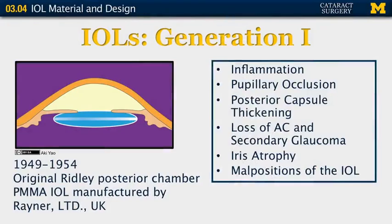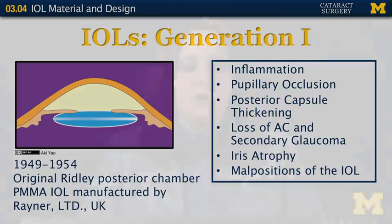Let me start first with a history of intraocular lenses. The original intraocular lens was created by Sir Harold Ridley. Sir Harold Ridley had noted that pilots were returning from World War II with pieces of plane canopy in the eye, and they were tolerating the material quite well. This canopy was made of polymethyl methacrylate. He therefore decided this might be a good material to try for the first intraocular lens. He designed a lens that was basically similar in size and shape to the natural lens.